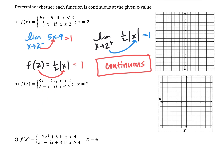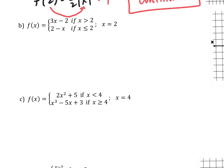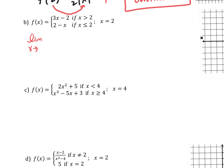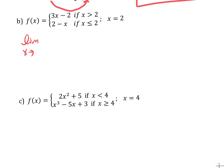Now I'm staring at a piecewise function. We're going to find the limit as x approaches 2 from the left and from the right, using whatever x value is given — in this case, 2. Approaching 2 from the left means x is less than or equal to 2, so I use 2 minus x. Plugging in 2: 2 minus 2 equals zero. From the left, we get zero.